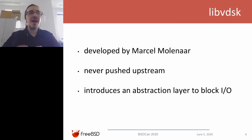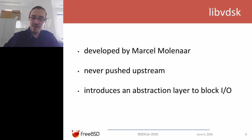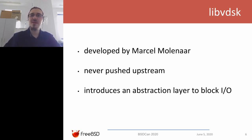For adding support for multiple disk types, we're using libvdsk. Libvdsk is the work by Marcel Molinar and it's basically a library that aims to collect implementations written in C for many different disk types such as VMDK, QCOW, VHDX, and so on. This library has never been pushed upstream, but the cool thing is that it actually fits perfectly with the Bhyve code. Let's look at how it would fit into Bhyve.